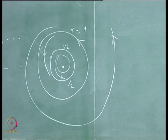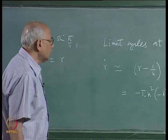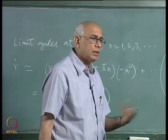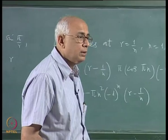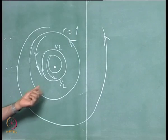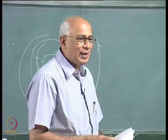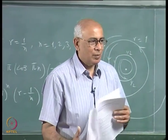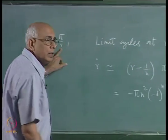At r = 0, the function sin(π/r) has no limit as r → 0. What you have is an accumulation of limit cycles of alternating stability. So r = 0 is a singular accumulation point, not a simple critical point — the flow becomes more and more intricate as you approach it.